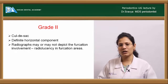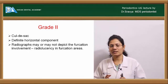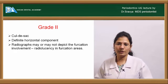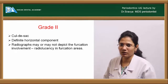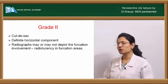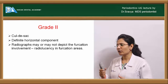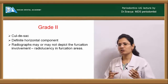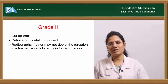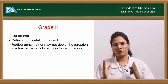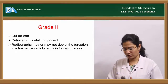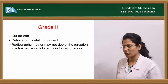Grade two furcations are the best candidates for regenerative surgeries. Radiographically, a hazy, fuzzy, or slightly radiolucent appearance is visible in the furcation area.